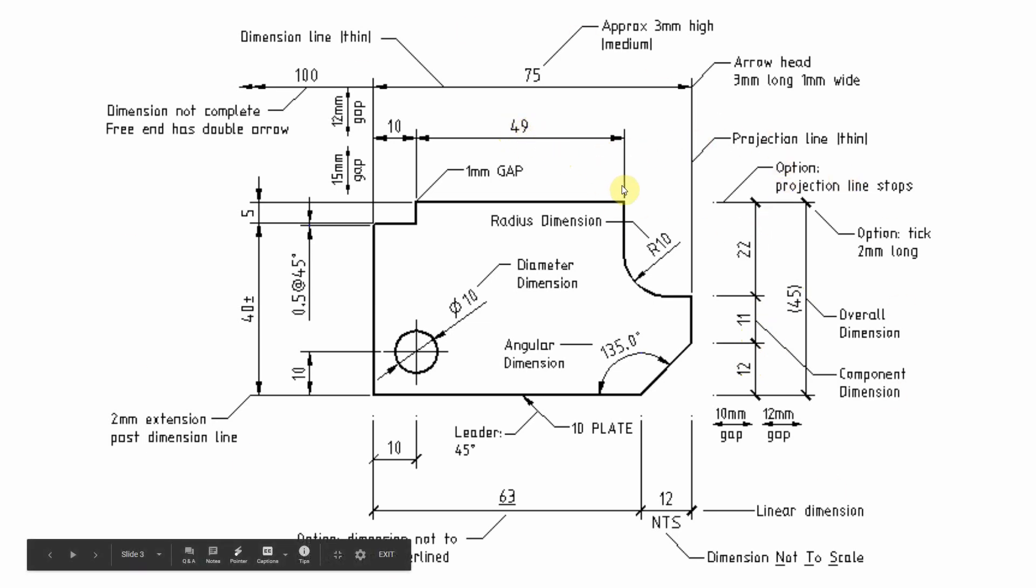And it's noted somewhere either on the title block or in the general notes of the drawing set that all dimensions are in millimetres. So you don't need to needlessly repeat mm and clutter the drawing every time on a dimension. And so that's the same with civil drawings with metres. You would just have that noted somewhere in the drawing set.